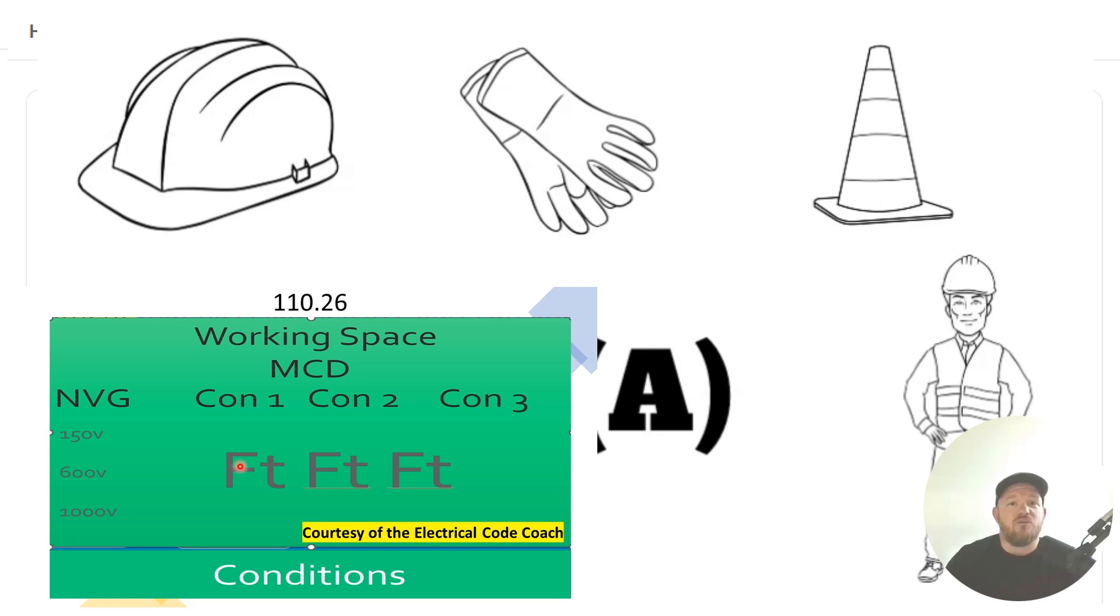First, let's start with our nominal voltage to ground. Ours was 480/277, but we're only going to be working with that lower number because that is our highest voltage to ground in this case. So it's going to fall into this middle column if you're between 151 volts and 600 volts.